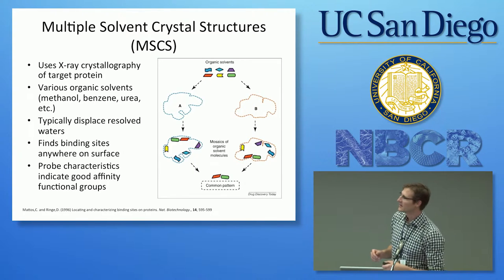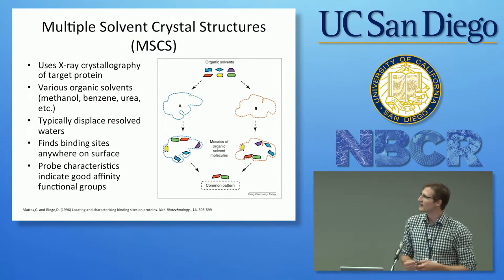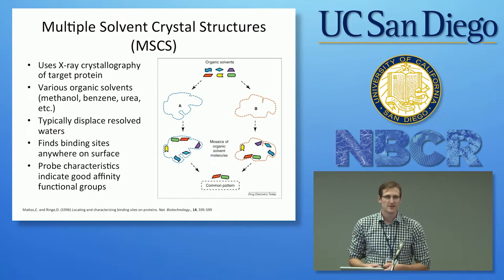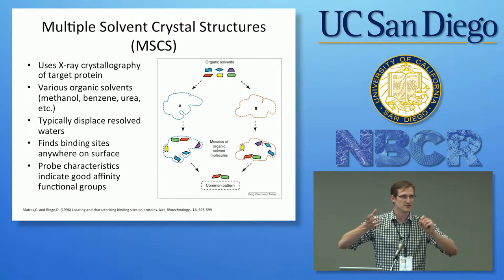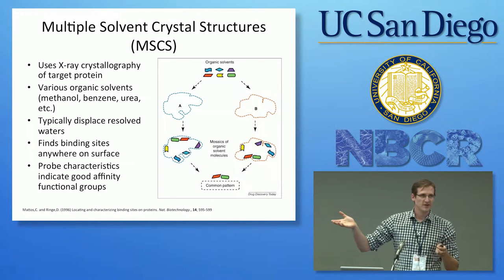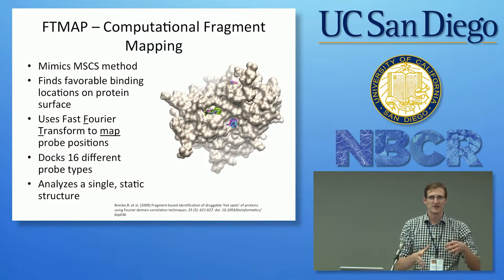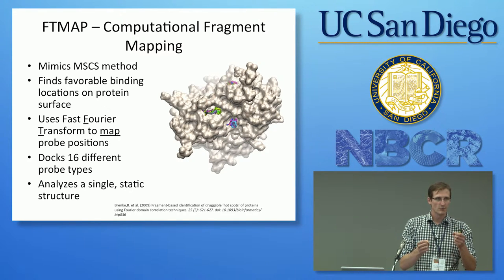These are the probes it uses — methanol, ethanol, isopropyl alcohol, et cetera. It's a web service where you give it a PDB file or PDB code. It samples billions of different possible conformations for these small molecules, chooses the 2000 best ones, uses the CHARMM potential to minimize their locations and orientations, clusters them once, then takes the centroids and clusters them again.